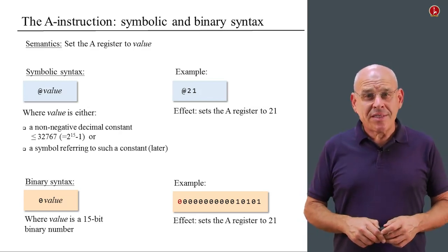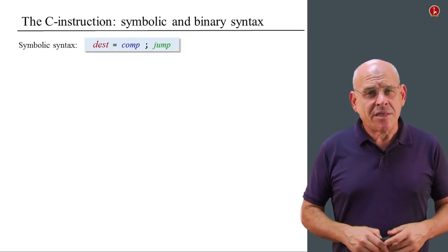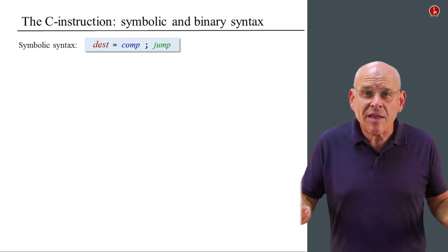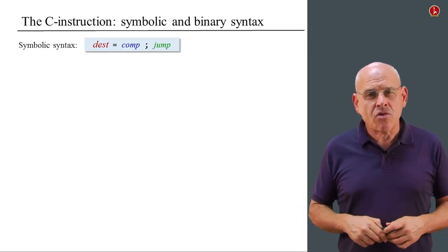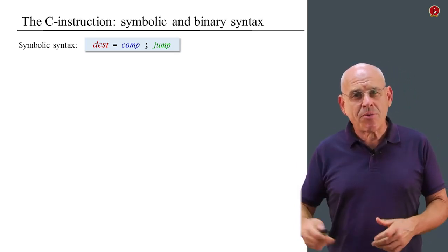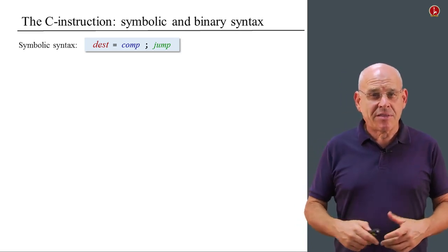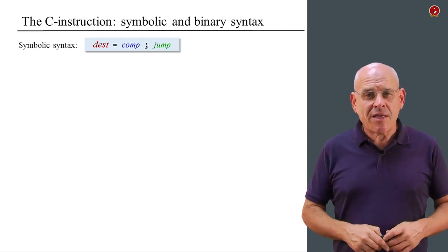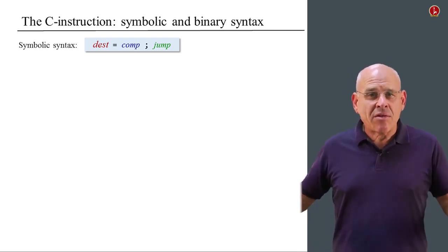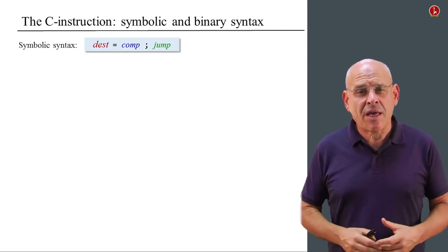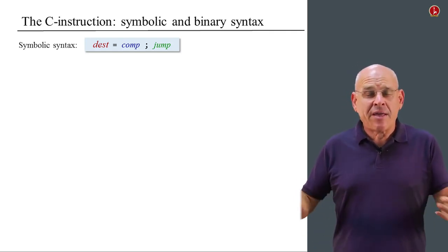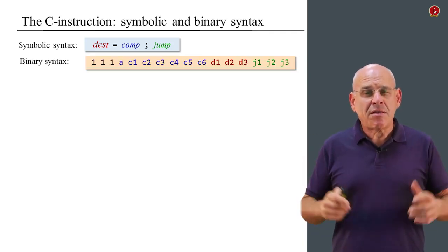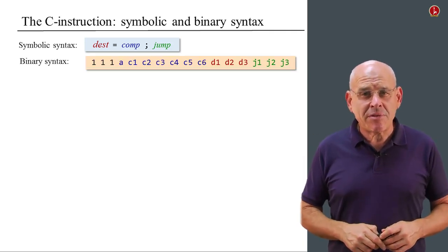What about the C instruction? Well, the C instruction, as you recall, the symbolic definition of the C instruction is very user-friendly. We have a computation which we can store in a certain destination, and we have an optional jump directive. And that's the great benefit of symbolic expression. If we want to express it in binary, then we have to decide on some agreed-upon codes. And Noam and I have already done that when we designed this language.